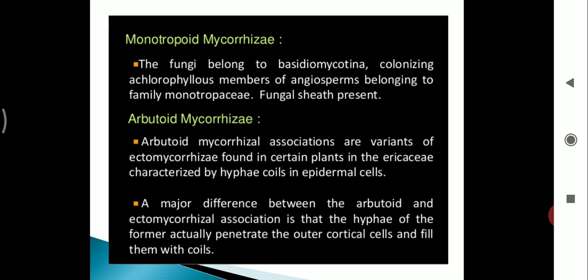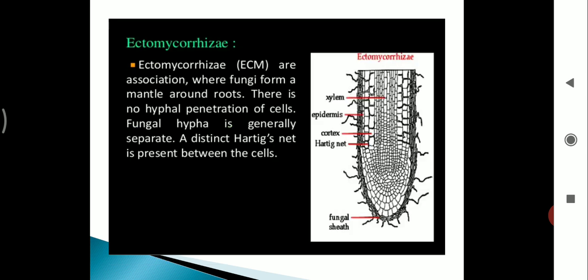Next, monotropoid mycorrhizae. The fungi belong to Basidiomycotina, colonizing achlorophyllous members of angiosperms belonging to family Monotropaceae. The fungal sheath is present. Arbutoid mycorrhizae associations are a variant of ectomycorrhizae found in certain plants in the Ericaceae, characterized by hyphal coils in epidermal cells. A major difference between the arbutoid and ectomycorrhizae associations is that the hyphae of the former actually penetrate the outer cortical cells and fill them with coils.